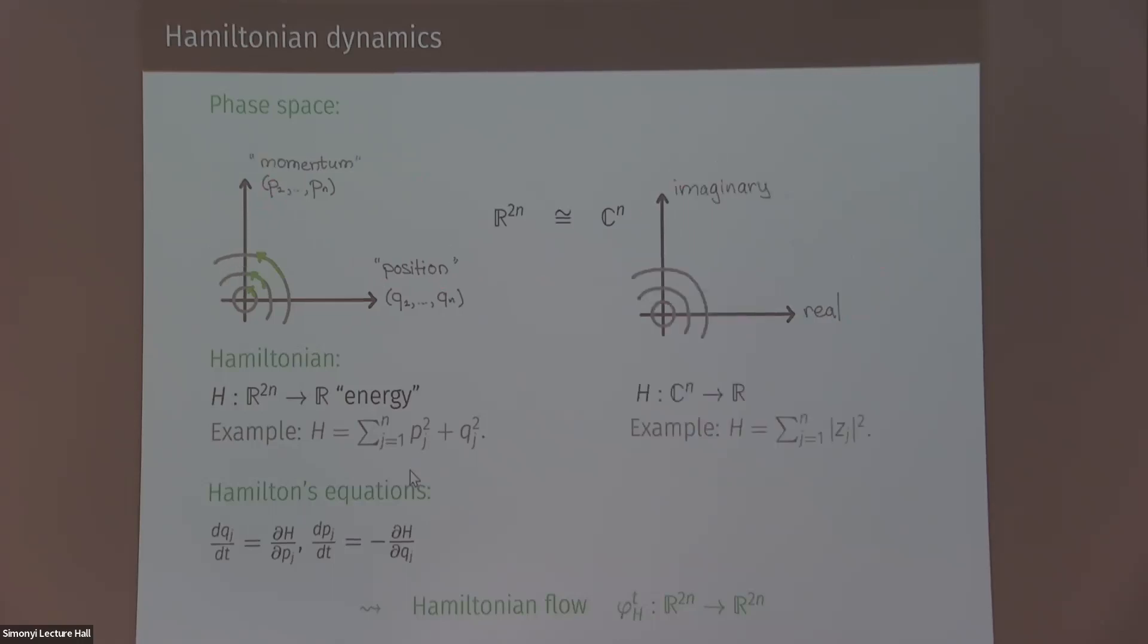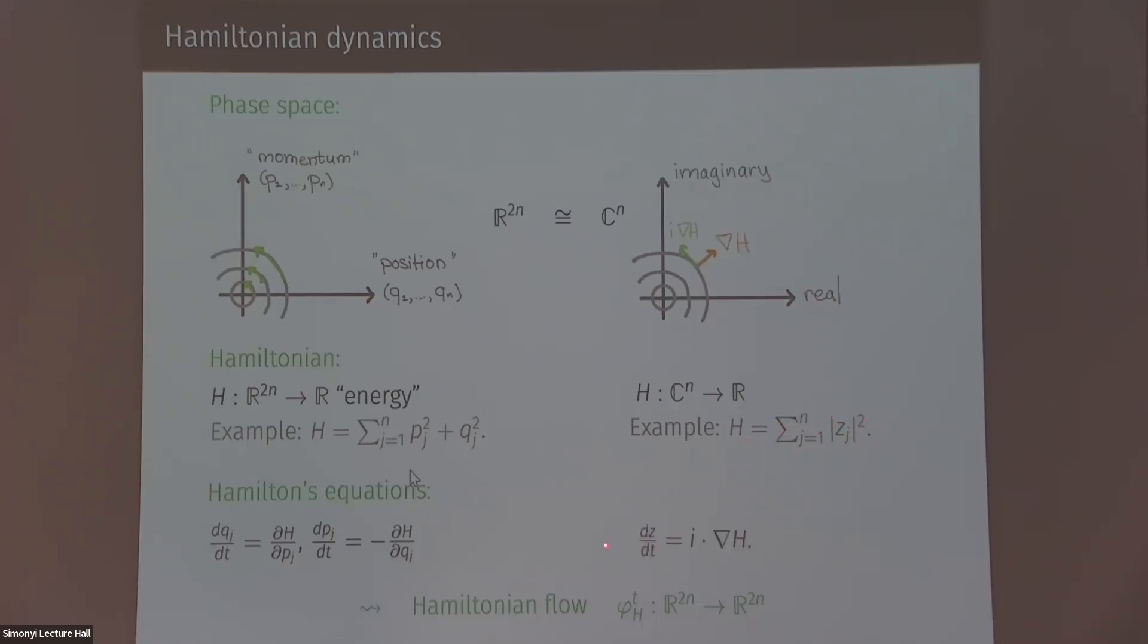And then you can think of your position coordinates as real coordinates and the momentum as imaginary. And now in this language, your Hamiltonian is a function from CN to R. But Hamilton's equation take a nice form. Basically, the physical motion is generated by the gradient of the function H rotated by 90 degrees when you multiply it by i, the complex number.